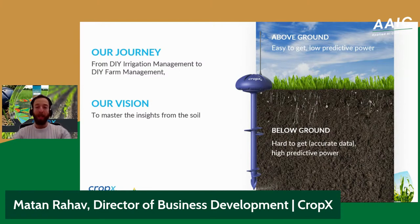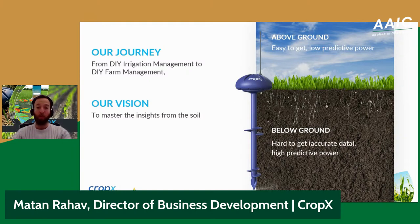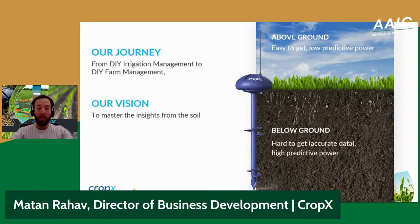Most ag tech startups focused on above-ground data like satellite imagery, drones, and cameras mounted on tractors — no one focused on data from soil. Above-ground data is scalable and affordable, while soil data requires very complicated, cumbersome, expensive sensors. When it comes to irrigation and nutrition management, above-ground data only allows you to be reactive, not predictive. By the time there are visible signs of stress detectable from a satellite image, the damage has already been done and there's a guaranteed yield reduction. By monitoring soil in real time, we can be predictive and preventive — knowing a plant hasn't received enough water or fertilizer before the plant does. That's what CropX is all about.